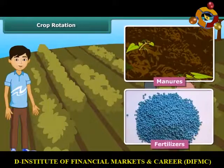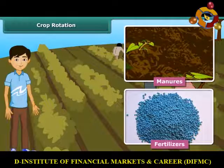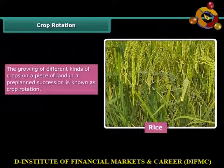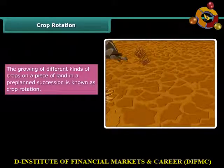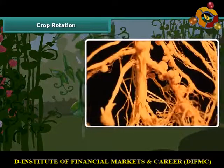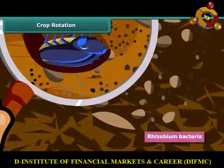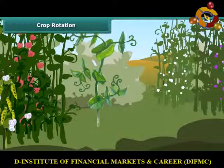Now let us move on to know another method of replenishing the soil with nutrients — crop rotation. When a cereal crop like rice is grown in the soil, it uses up a lot of nitrogenous salts, so if another cereal crop is grown in the same soil, the soil becomes nitrogen deficient. By rotation, a leguminous crop should be grown after a cereal crop. Rhizobium bacteria, present in the root nodules of leguminous plants, fix atmospheric nitrogen to form nitrogen compounds. When these nitrogen compounds go into the soil, the soil becomes more fertile, resulting in increased food grain production.